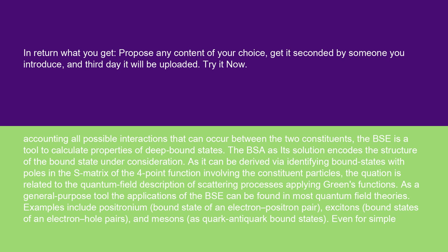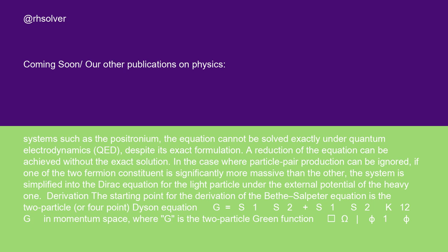Even for simple systems such as the positronium, the equation cannot be solved exactly under quantum electrodynamics, QED, despite its exact formulation. A reduction of the equation can be achieved without the exact solution. In the case where particle pair production can be ignored, if one of the two fermion constituent is significantly more massive than the other, the system is simplified into the Dirac equation for the light particle under the external potential of the heavy one.